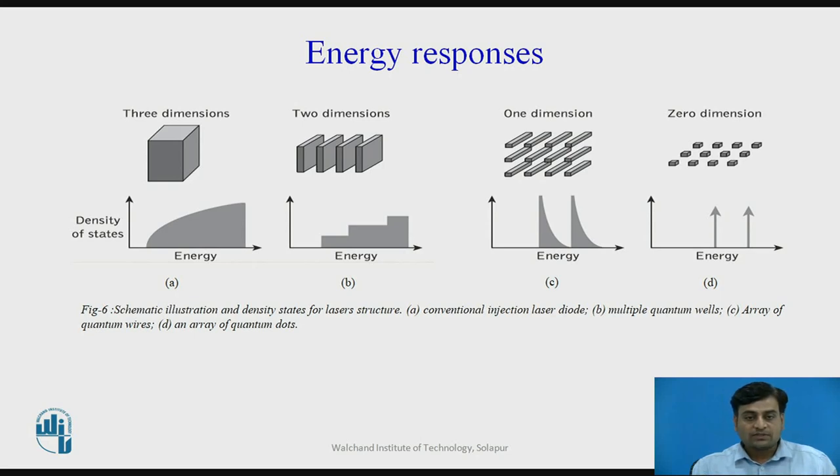The above hierarchy is illustrated in figure number 6, which identifies four different possible structures for the semiconductor laser with their corresponding energy responses with respect to the carrier densities shown underneath. The three dimensional structure of the conventional injection laser is displayed in figure number 6A.